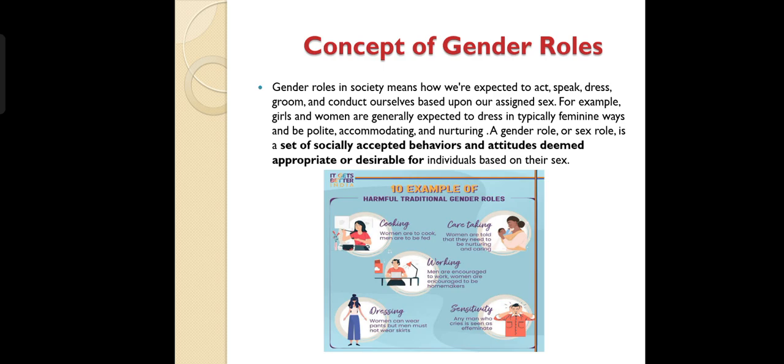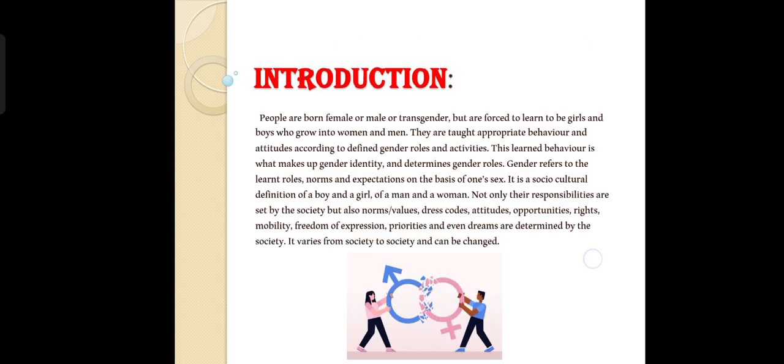For example, girls and women are generally expected to dress in typically feminine ways and be polite, accommodating and nurturing. Another example: women are to cook, men are to be fed; women are told that they need to be nurturing and caring, men are encouraged to work, women are encouraged to be homemakers. These are the examples of gender roles.